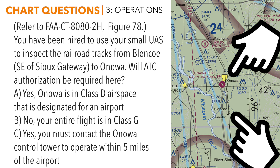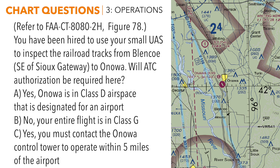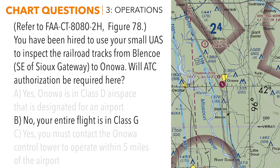The question asks whether we need ATC authorization, so we identify the airspace. We have thick shaded magenta lines around us — that's Class E airspace starting at 700 feet AGL. All undesignated airspace outside that has Class E starting at 1,200 feet AGL; below that is Class G, which is uncontrolled. We don't need ATC authorization in uncontrolled airspace, and no portion of this flight puts us in controlled airspace. The correct answer is B — no, your entire flight is in Class G airspace. The Onewa airport is a magenta airport with no control tower, so no authorization is required.